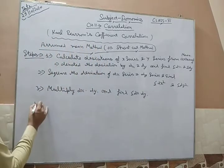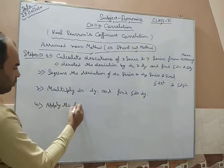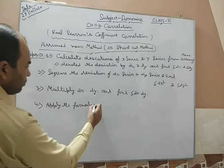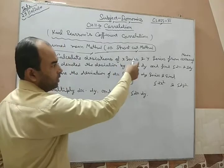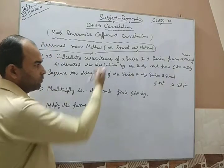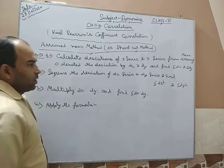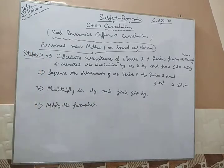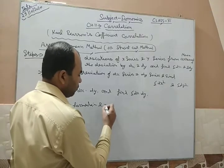The last step is to apply the formula. I have to mention both X series and Y series, then dx squared, then dy squared. Correlation is denoted by small r.